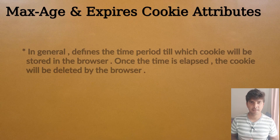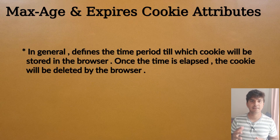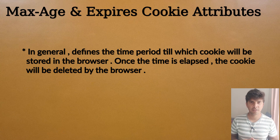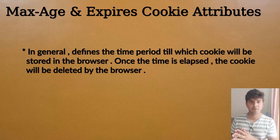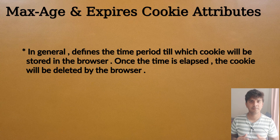Expires and max age attributes define the time period of a cookie — until which the cookie will be stored in the browser. So if the server wants the browser to store the cookie for a certain amount of time, then the server will use the max age cookie attribute or the expires cookie attribute.